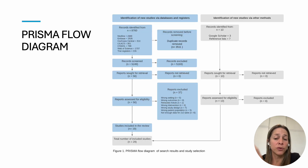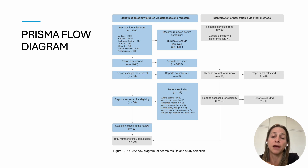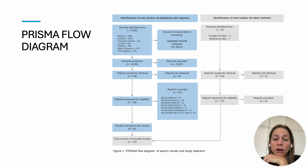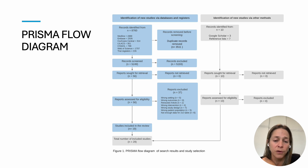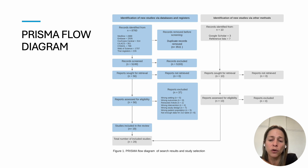Once both reviewers agree on which studies to include after title and abstract screening and full text review, you will have your PRISMA Flow Diagram. This tells you how many studies came from Medline, from Embase, from Cochrane Central, how many duplicates were removed, how many records were excluded after screening, how many were excluded after full text review, and how many were detected through your supplementary search methods.